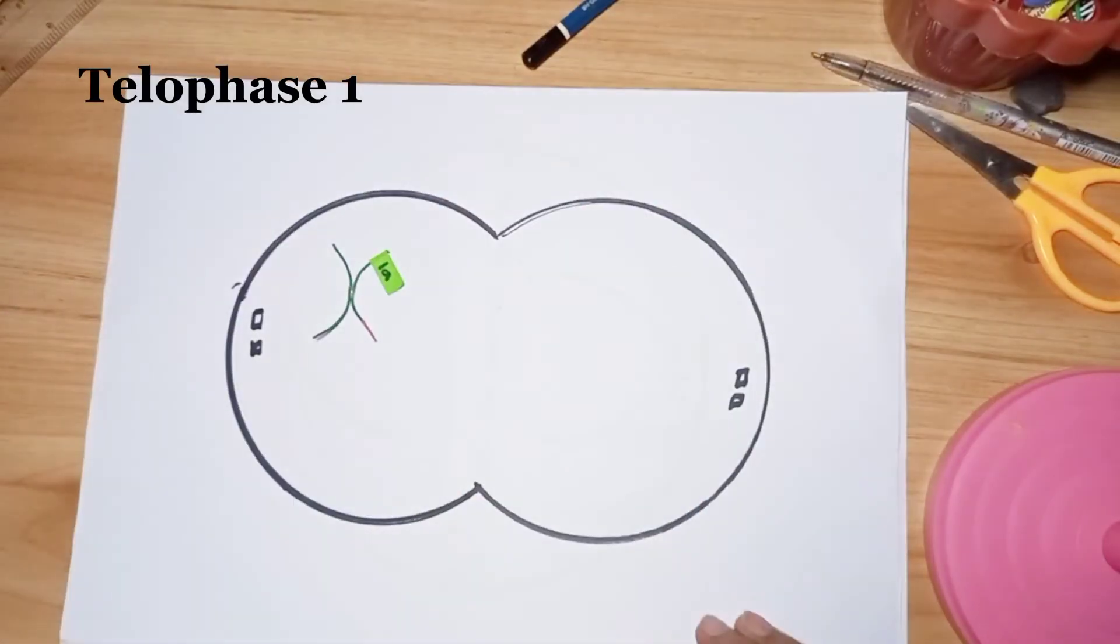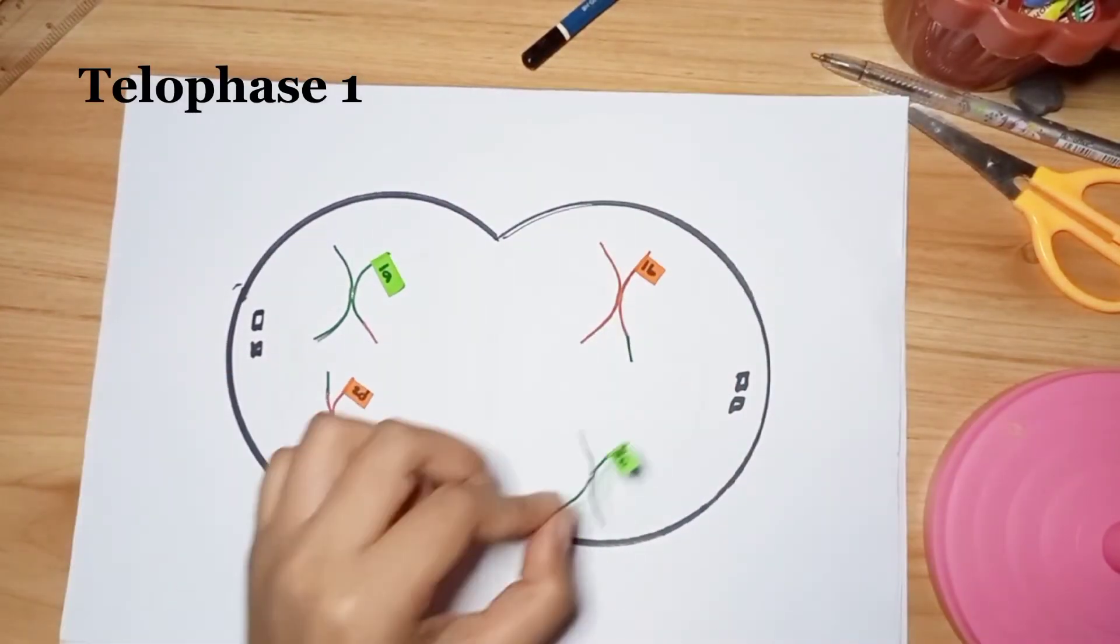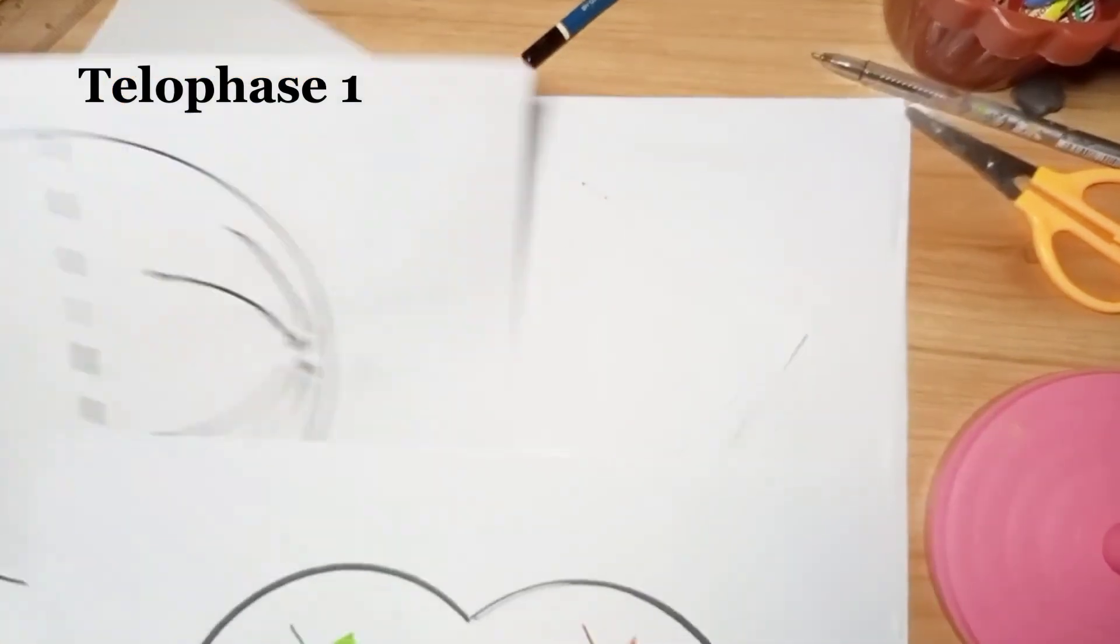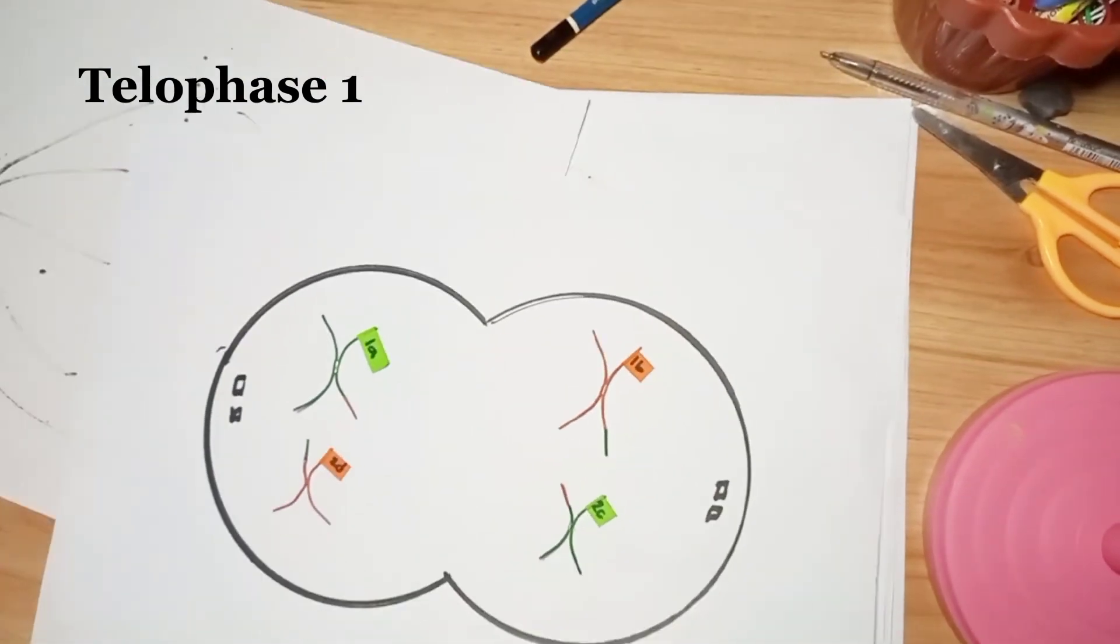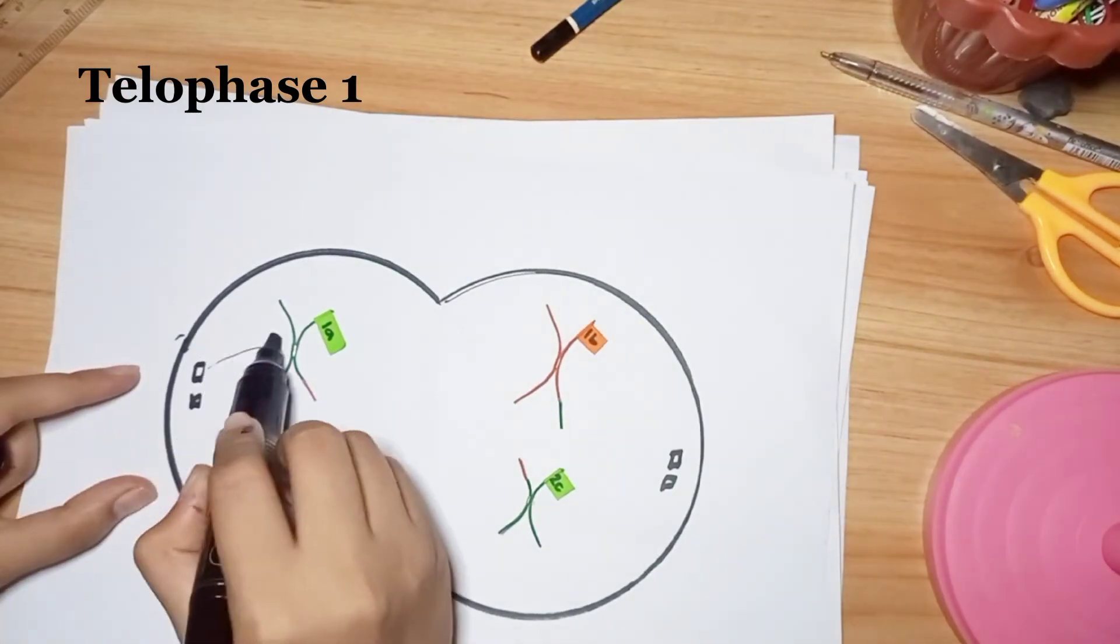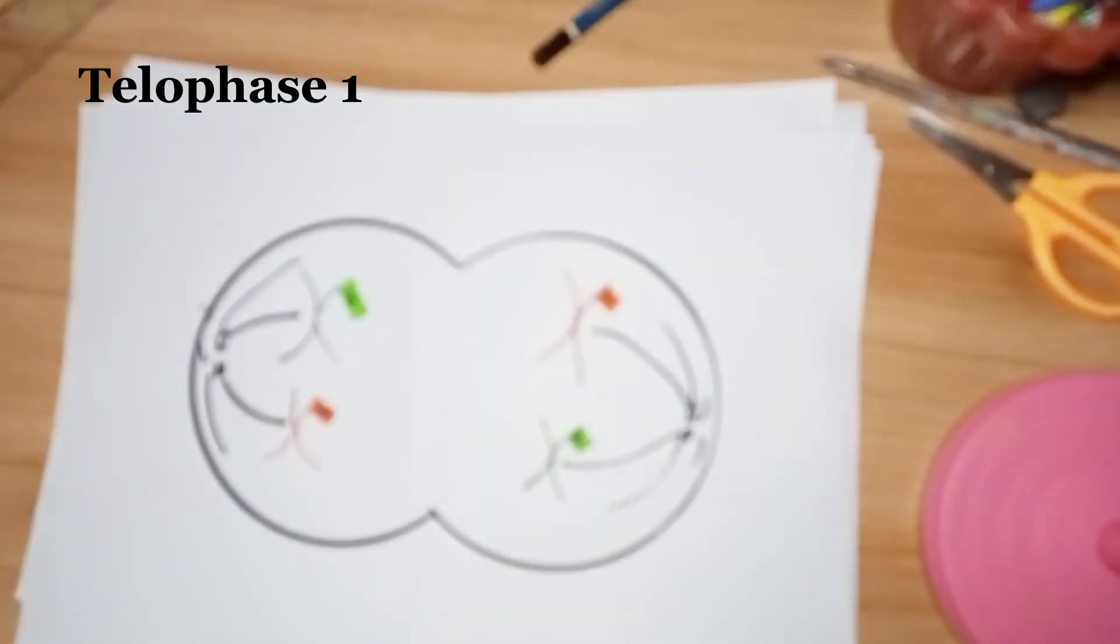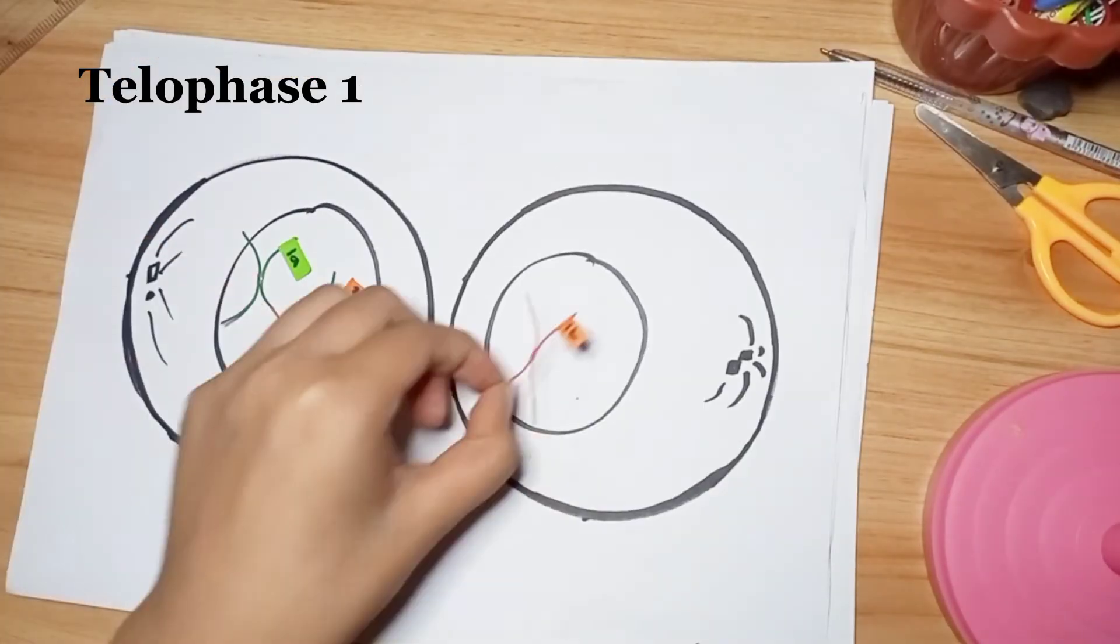During telophase I, the chromosomes are enclosed in nuclei. The cell now undergoes a process called cytokinesis that divides the cytoplasm of the original cell into two daughter cells. Each daughter cell is haploid and has only one set of chromosomes, or half the total number of chromosomes of the original cell.